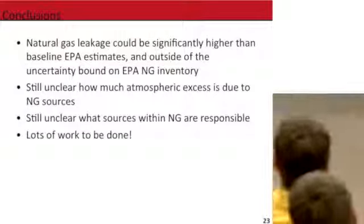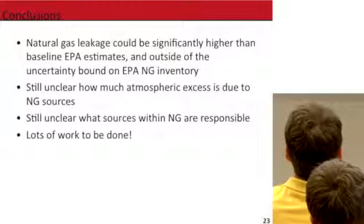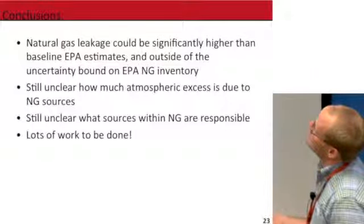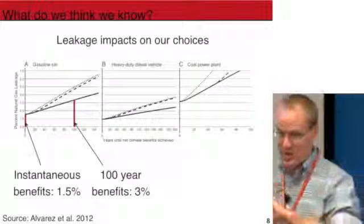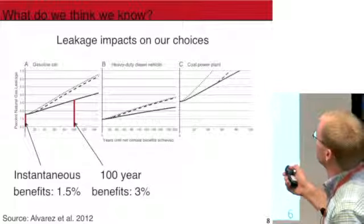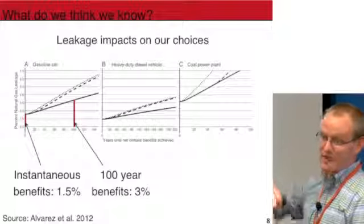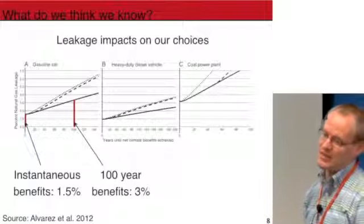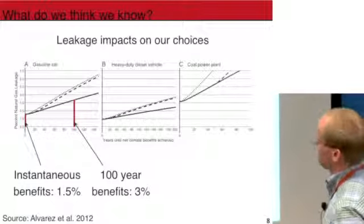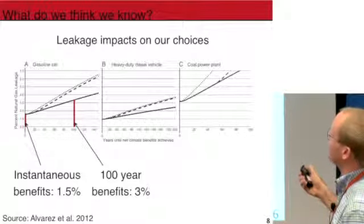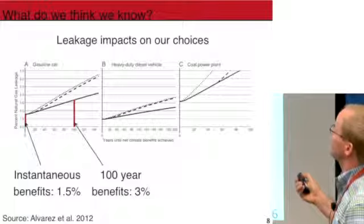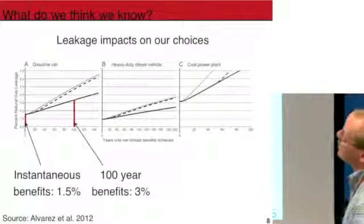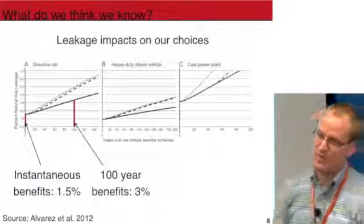Question: if EPA is underestimating significantly, is natural gas making the climate worse? It all depends — these questions are always comparative. It's always worse compared to what? What else would we do to generate our energy? The Uinta Basin found six to eleven percent, but there's evidence from continental-scale measurements that that just can't be typical — if it were, we'd see way more methane in the atmosphere. It's very improbable that we're at those sorts of levels on average. So coal-to-gas switching is almost certainly a good deal. Heavy duty vehicles — not likely. And gasoline cars are sort of up in the air.